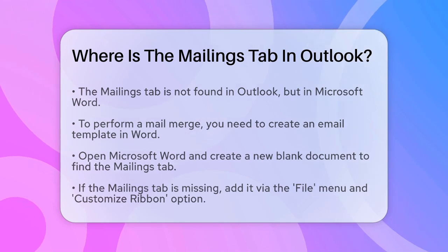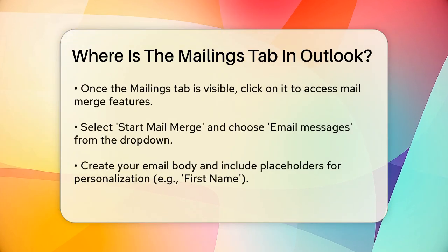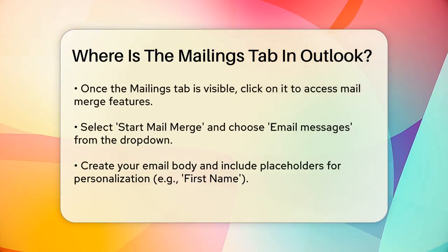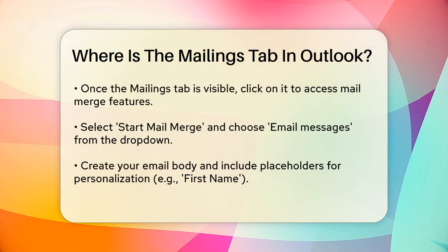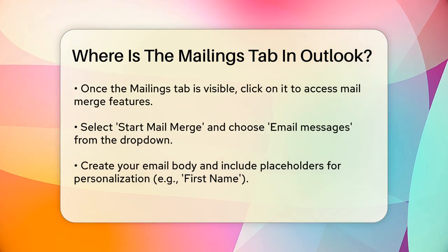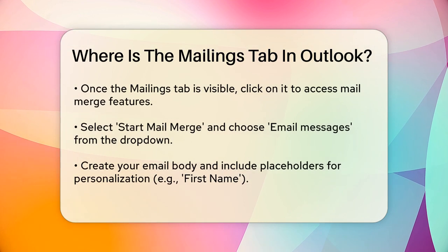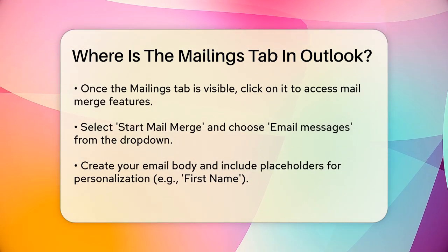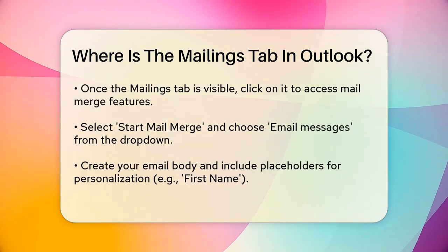Once you're in Word, look at the top menu bar. If you don't see the Mailings tab, you might need to add it. Go to the File menu, select Options, and then choose Customize Ribbon. Here you can add the Mailings tab from the list of available commands.